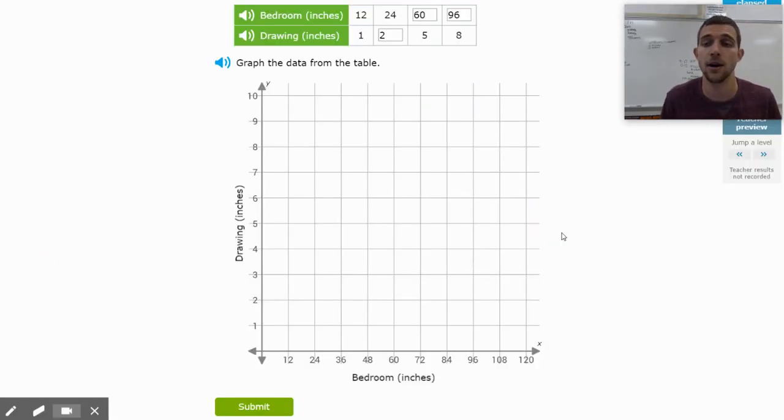We can now take what we have done in the table and put it onto the graph. You will notice that the y-axis is labeled as being the drawing. And the x-axis, the one that goes side to side, is labeled as being the bedroom. If we look at our table, we have one drawing corresponds to 12 inches in the bedroom. So let's go up 1 on the y-axis, which is drawings, and then go over to 12 on the x-axis, which is the bedroom. Put a point there.